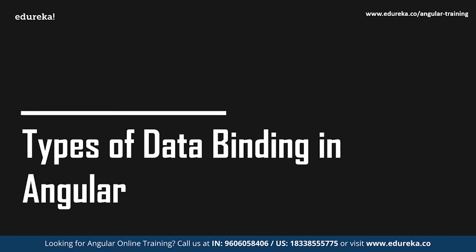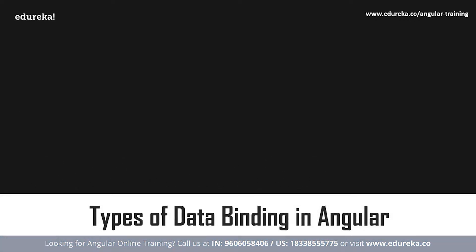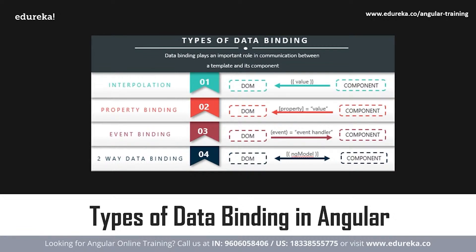Angular allows both one-way as well as two-way data binding. One-way data binding is a simple type of data binding where you are allowed to manipulate the views through the models. This implies that making changes to the TypeScript code will be reflected in the corresponding HTML. In Angular, one-way data binding can be achieved through interpolation or string interpolation, property binding, and event binding. Two-way data binding, on the other hand, allows synchronization of data such that views can be updated using the models and the models can be updated using the views. This means your application will be able to share information between a component class and its template.